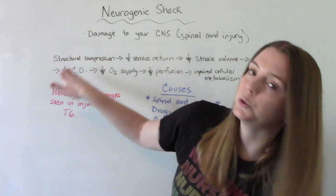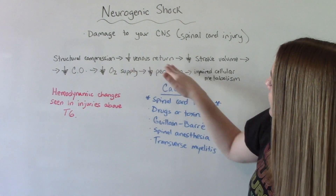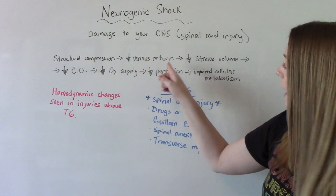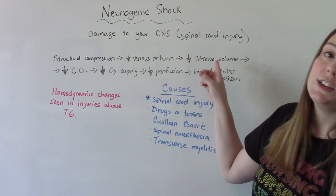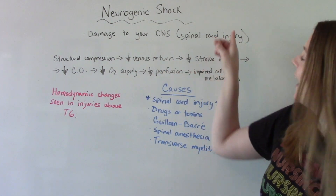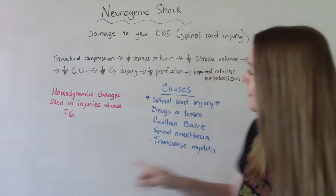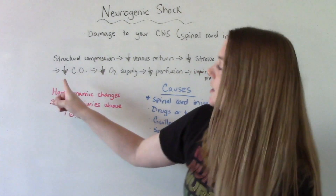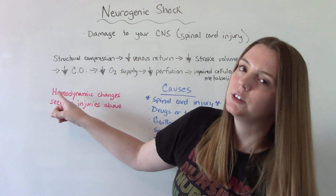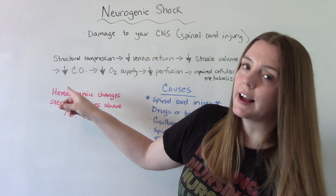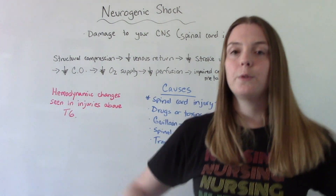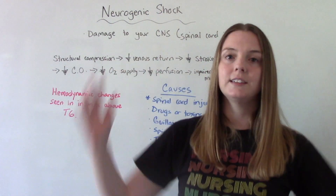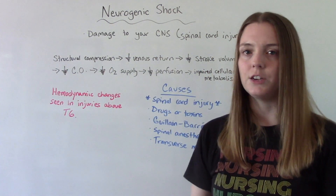Structural compression leads to decreased venous return — so not enough blood flow. When you don't have enough blood flow, you have a decrease in stroke volume. Stroke volume directly affects our cardiac output, so a low stroke volume is going to equal a low cardiac output. We don't want low cardiac output because cardiac output is the blood being pumped throughout our body — we need that to be nice and normal.